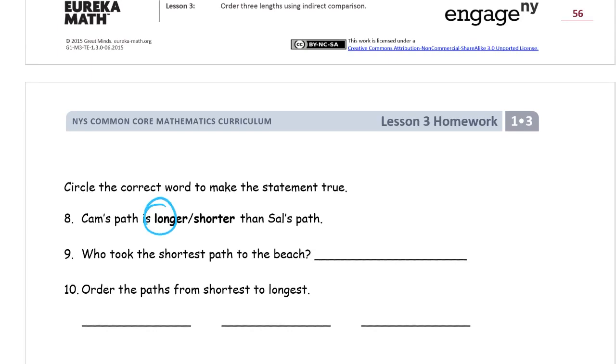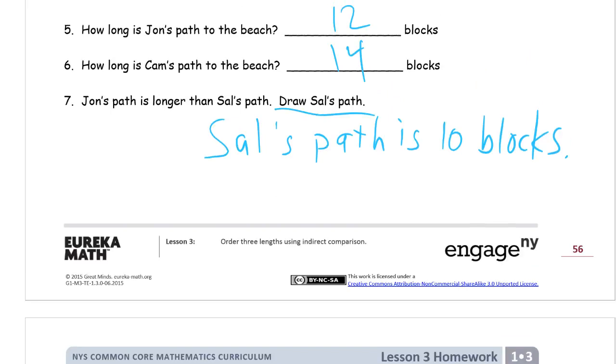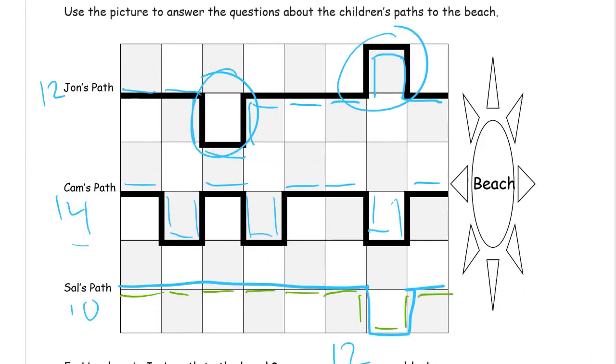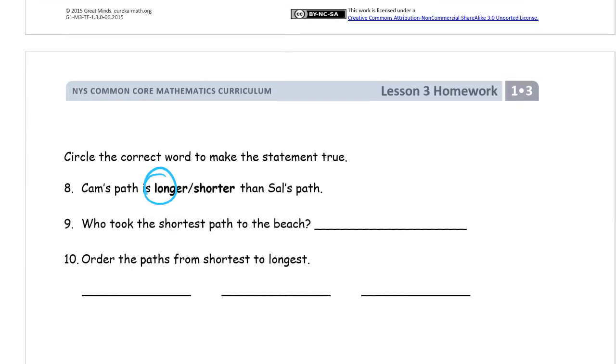And who took the shortest path to the beach? Well, we wrote it down. So John is 12, Cam was 14. Sal's was 10. So Sal's is the shortest path to the beach. But it's who took the shortest path. We don't want 10 for our answer here. We want Sal.